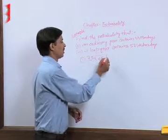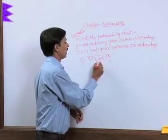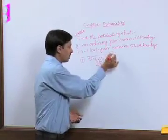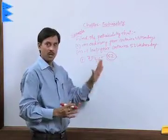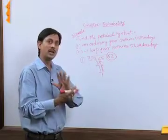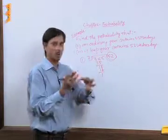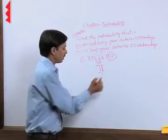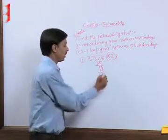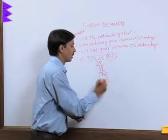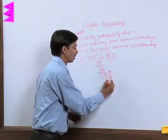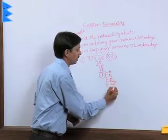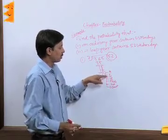Dividing 365 by 7: 7 times 52 equals 364, so we get 52 complete weeks with 1 day remaining. This means there are 52 complete Mondays, Tuesdays, Wednesdays, Thursdays, Fridays, Saturdays, and Sundays. This one remaining day may be any of the seven days — Monday, Tuesday, Wednesday, Thursday, Friday, Saturday, or Sunday.